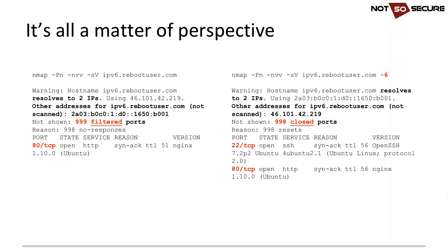Running an nmap default scan against the IPv4 interface shows 999 filtered ports and only port 80 open — the host is behind a firewall. The same scan against the IPv6 interface shows 998 closed ports (not behind a firewall, or an incorrectly configured one), with two ports exposed: port 80 and SSH. Via IPv6, we've identified it's not behind a firewall and have a second port to target.